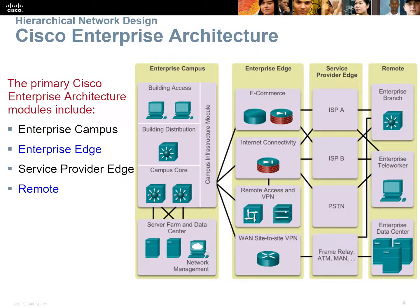Now we're going to explode that model out even larger. All three layers — core, distribution, and access — are just inside our enterprise. Now we have links to the internet, firewalls, VPN concentrators, dedicated routers for site-to-site links, e-commerce, multiple ISPs, possibly an old-school public switched telephone network, or even dedicated Ethernet WANs, ATM, frame relay, etc. So we've got to look at connecting our sites.